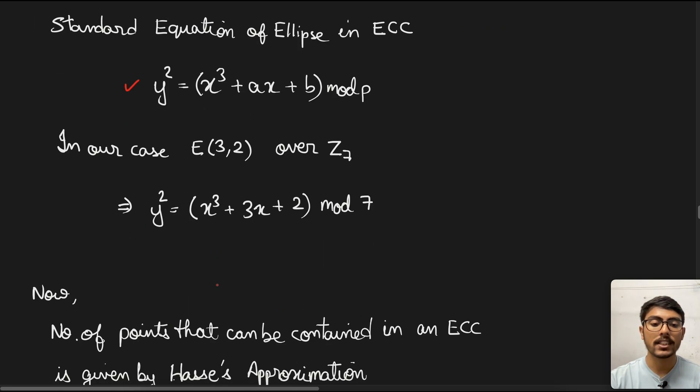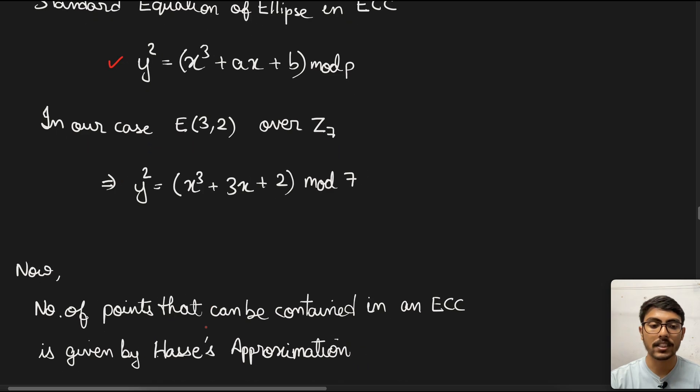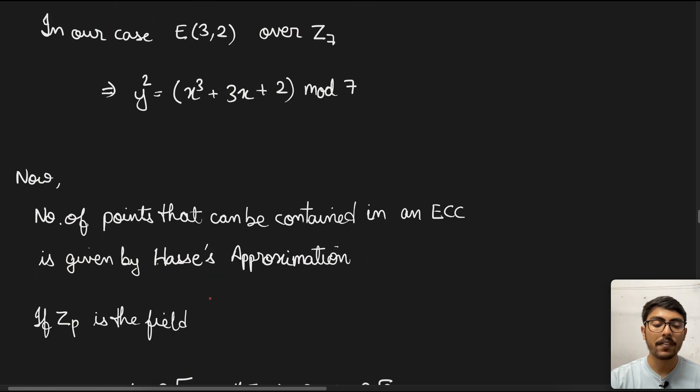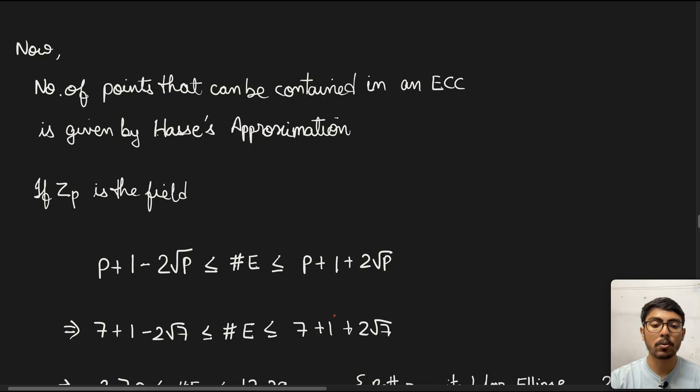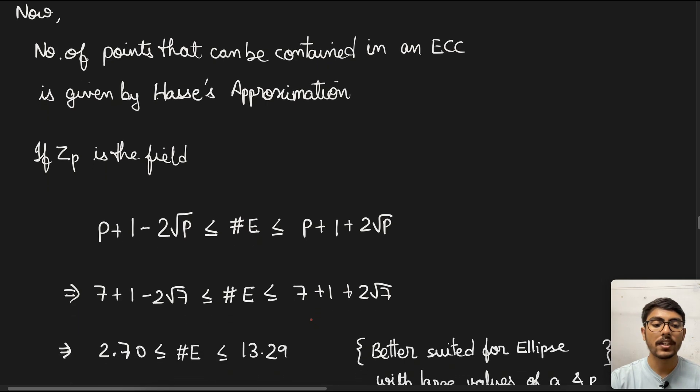Now, the number of points that can be obtained in an ECC is given by Hasse's approximation. If Zp is the field, as in our case, then p + 1 - 2√p ≤ number of points in the elliptic curve ≤ p + 1 + 2√p. If we simply put the value of 7 here, we get 2.70 < number of points < 13.29.